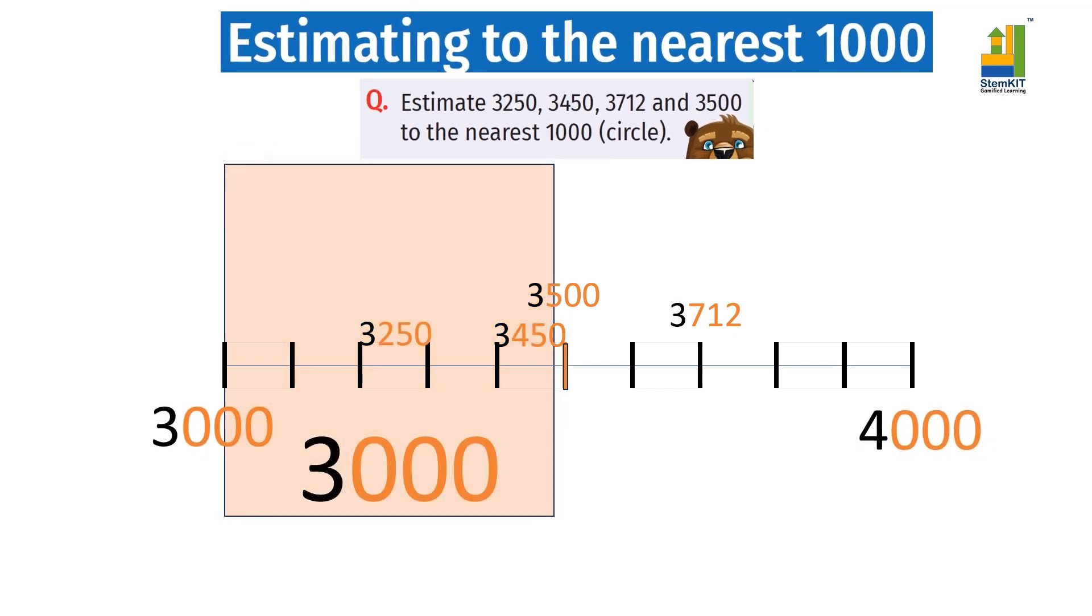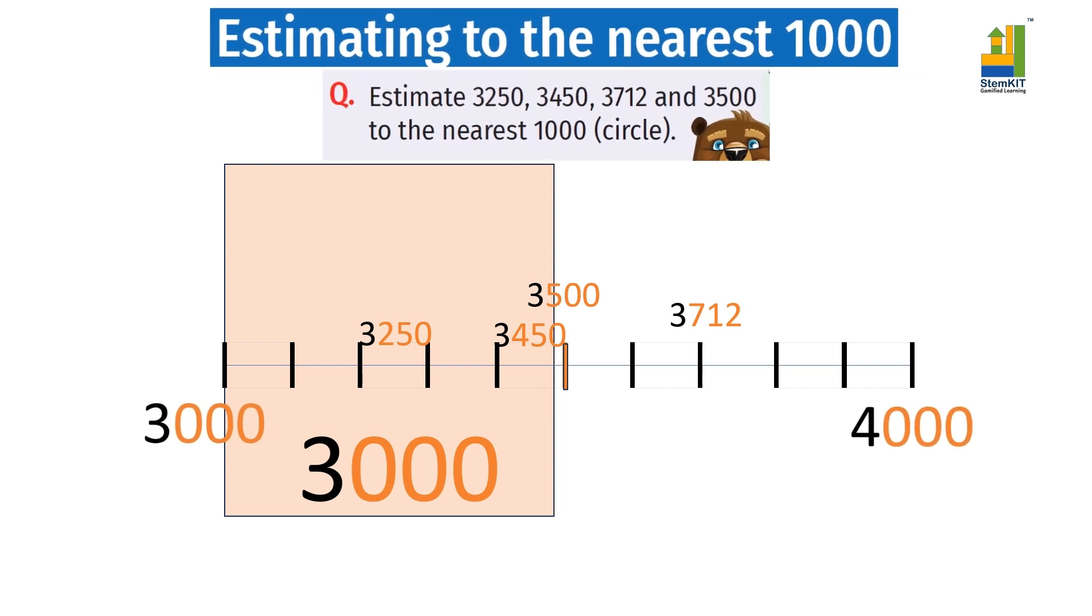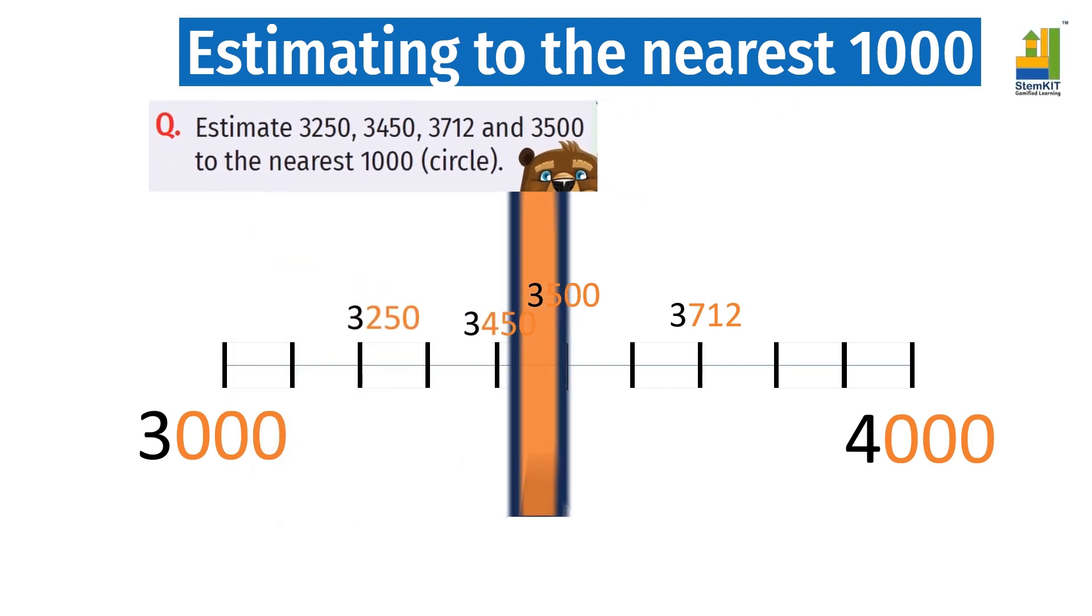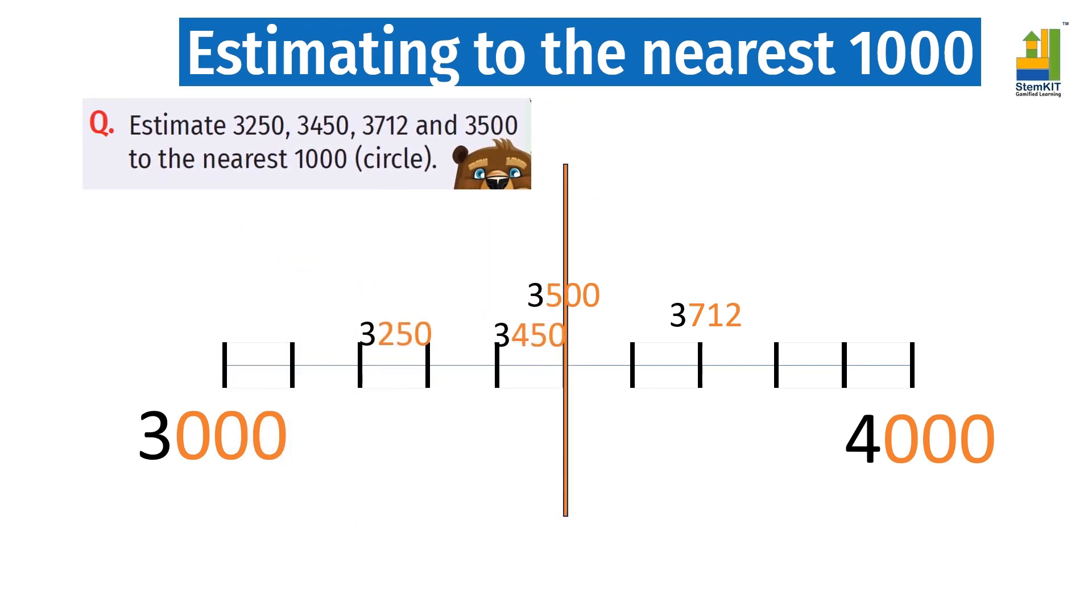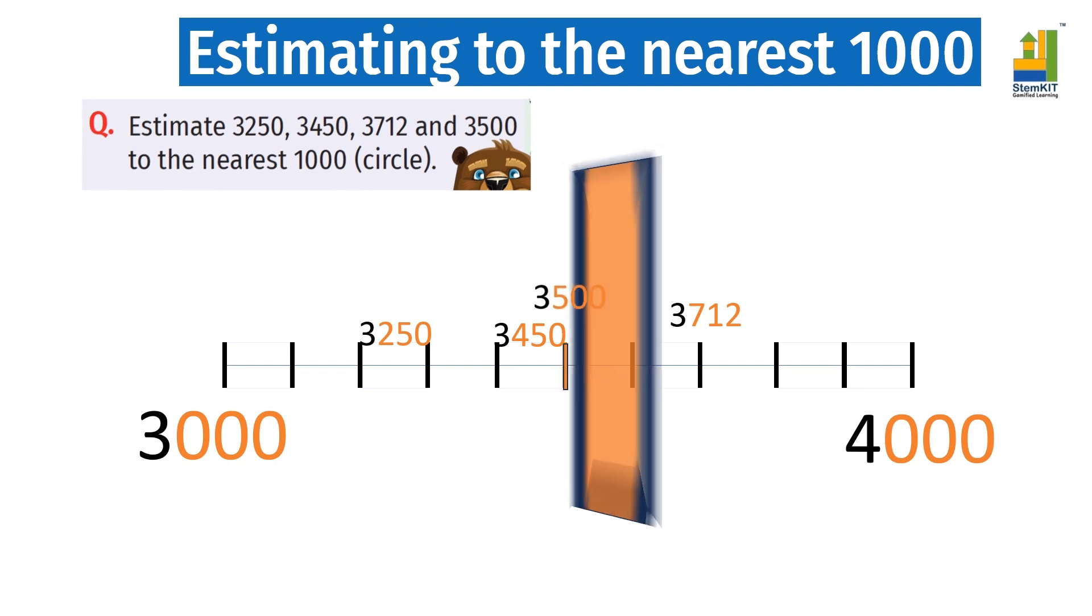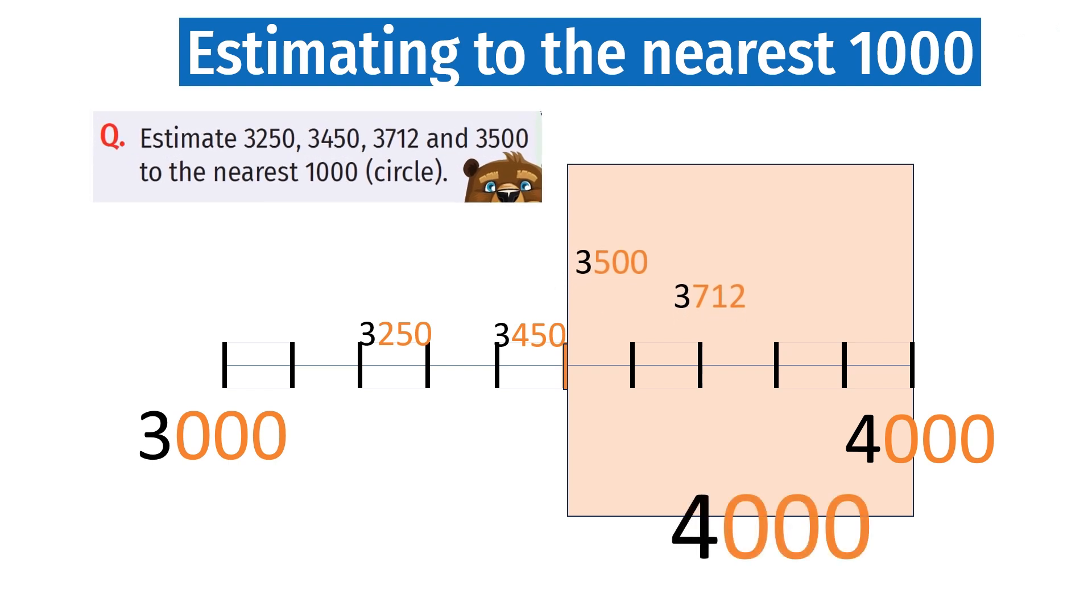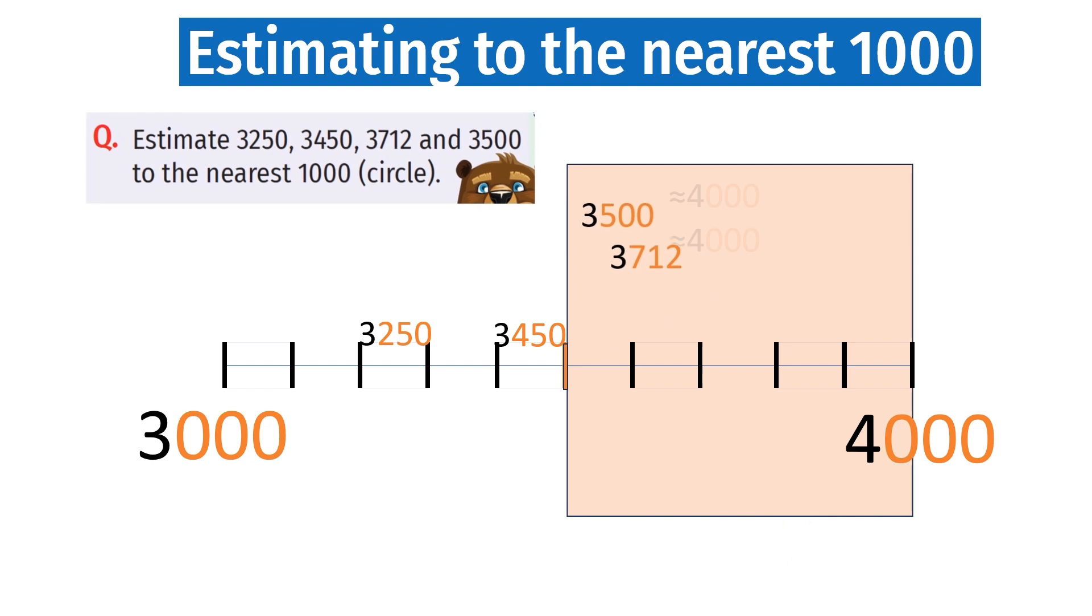So, 3250 and 3450 are estimated to 3000. 3712 and 3500, estimated to the nearest thousand, are each estimated to 4000.